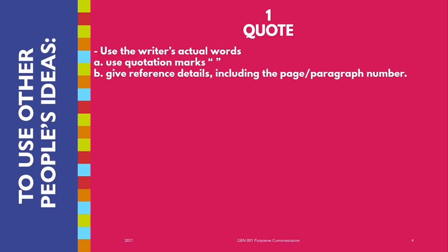When else do you do quotation? When exact wording is needed for technical accuracy. Another instance is when the words of an important authority lend weight to an argument — for example, when the person whose idea you are citing is very expressive and quoting them puts a lot of emphasis on your writing.